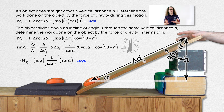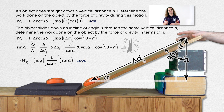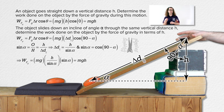Exactly. Furthermore, no matter what the angle of the incline is, the work done on the object by the force of gravity as the object goes down a distance h is the same. It always equals mass times acceleration due to gravity times height h. This is because the work done on an object by the force of gravity is independent of the path taken by the object.